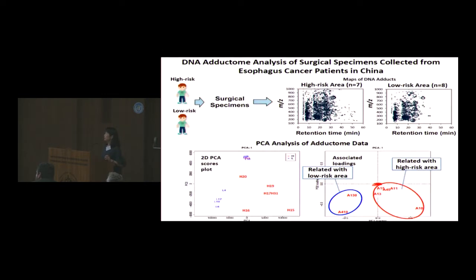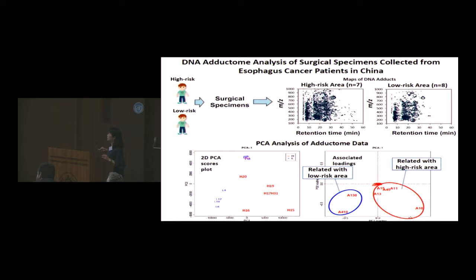This is a result of the adductome analysis. You can see maps of the DNA adducts, and a large number of DNA adducts can be seen in both high-risk and low-risk areas. To determine which DNA adducts are highly associated with the high-risk versus low-risk areas, we used PCA analysis. This 2D PCA score plot shows clear separation between the low-risk and high-risk areas, and the associated loading plots reveal several DNA adducts related to the high-risk area.